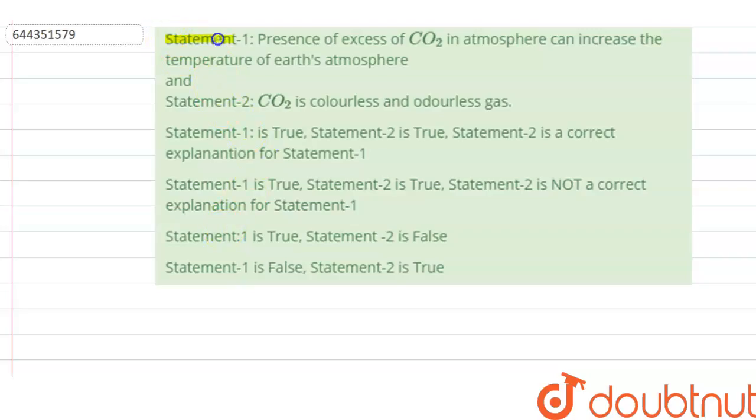The question says that Statement 1: Presence of excessive CO2 in atmosphere can increase the temperature of earth's atmosphere. And Statement 2: CO2 is colorless and odorless gas. Here we are given four options.